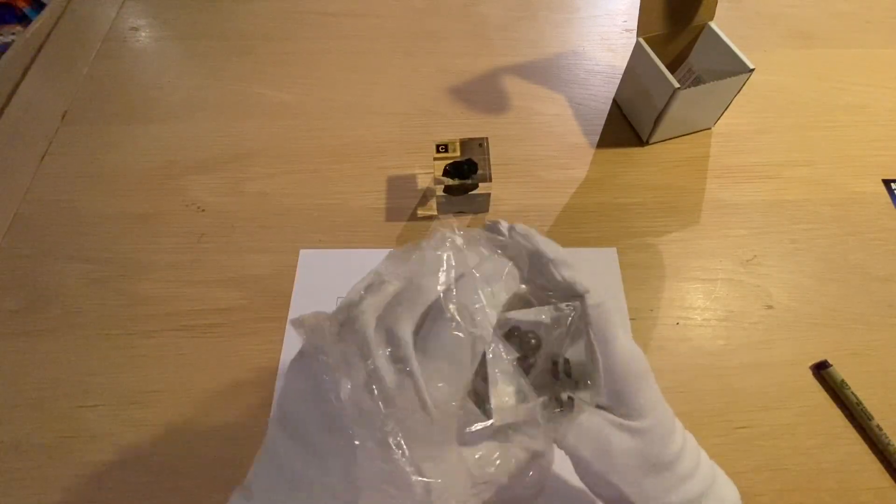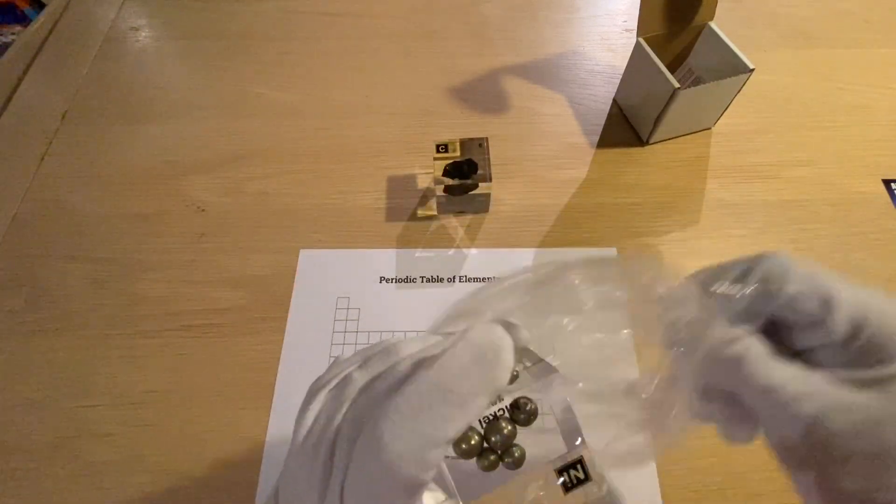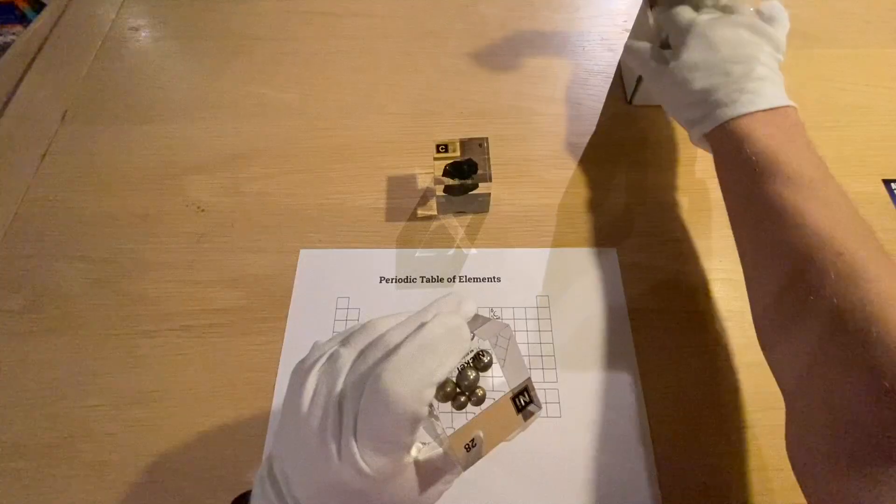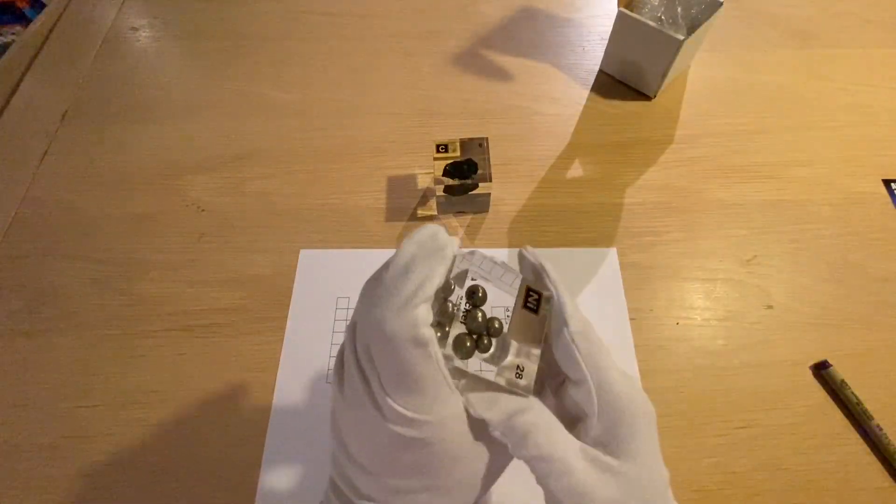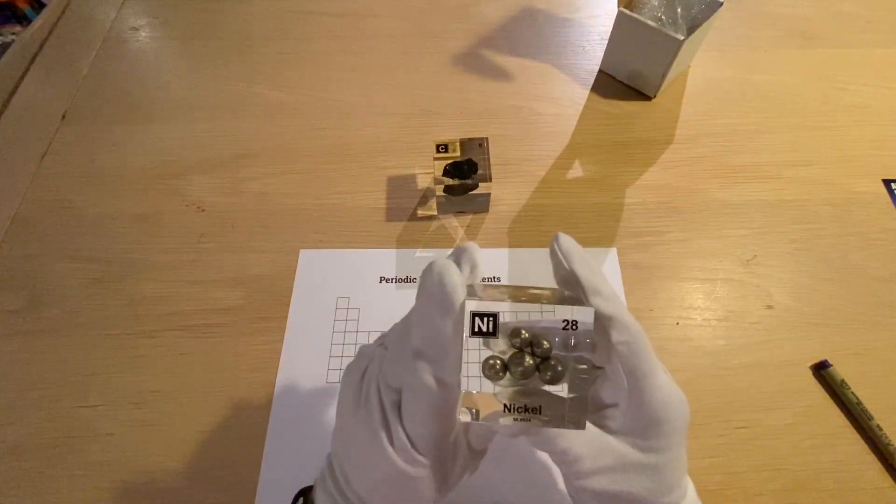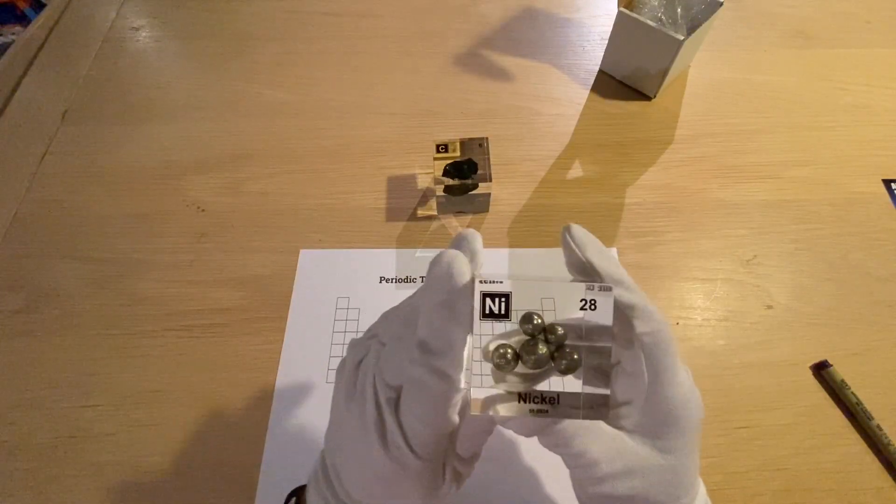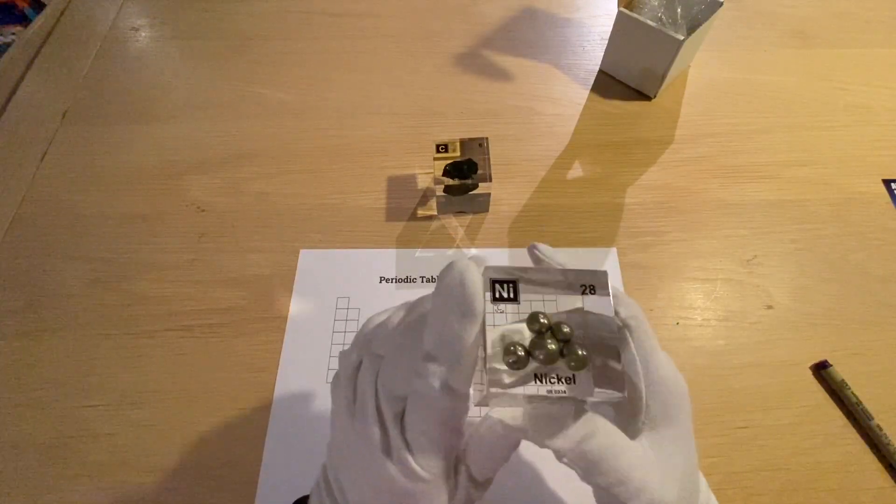So we got here these beautiful balls and the reason why they formed these balls is very likely because of the atomic structure that they have when they're melted and then recrystallized.